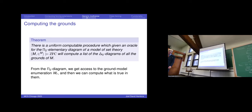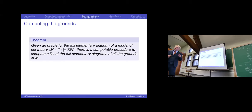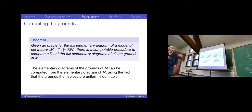Given an oracle for the full elementary diagram — not just pi-two, but the whole diagram — I can compute the full diagrams of all the grounds. The grounds are uniformly definable, so any truth assertion made in the ground is just some other more complicated assertion made in the forcing extension. The generic multiverse is uncountable, so you can't give a computable presentation of the whole thing — there are continuum-many forcing extensions of a model, for instance by adding a Cohen real. So we take a computable fragment and get a computable generic multiverse.